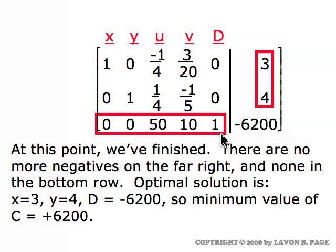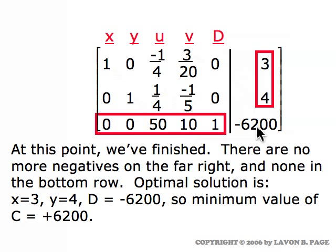To summarize the checking order: first verify no negatives remain in the far right column above the bottom; then check for negatives in the bottom row. When neither has negatives, interpret the tableau. U and V are not in basic unit form, so U equals zero and V equals zero. X equals three, Y equals four, and the maximum value of D is minus sixty-two hundred, so the minimum value of C is plus sixty-two hundred — confirming factory A for three days and factory B for four days at a cost of sixty-two hundred dollars.